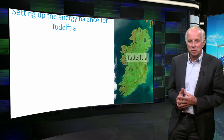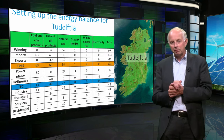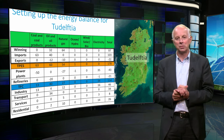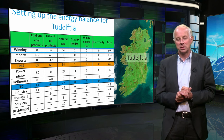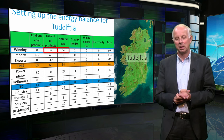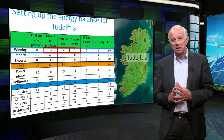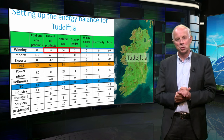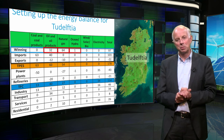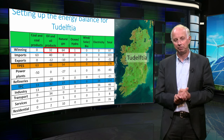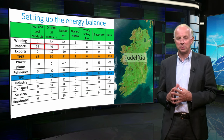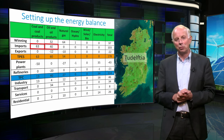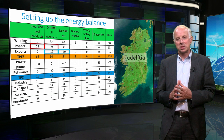Now let's run you through the process of setting up an energy balance for the country Tudeltsia. First of all, we start with the energy available for Tudeltsia, or the upstream part of the energy system. Energy is made available through the winning of energy carriers, such as oil and natural gas, of which Tudeltsia has vast reserves. Tudeltsia is also investing in hydroelectric plants, which can be noticed by the positive value in the column concerning ocean and hydro energy. These facilities produce electricity without an earth resource as input. Additionally, coal is imported from Australia, while oil and oil products are imported from various countries. On the other hand, energy carriers in the form of oil, oil products, and natural gas are exported to several countries.